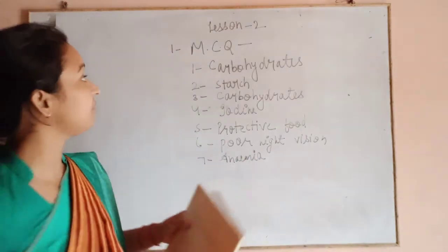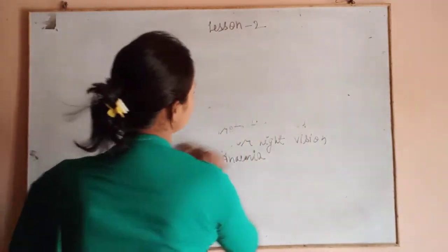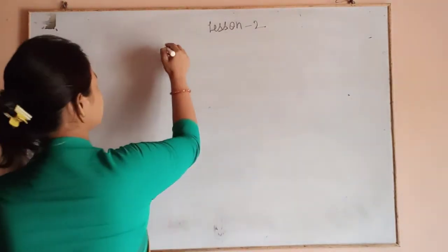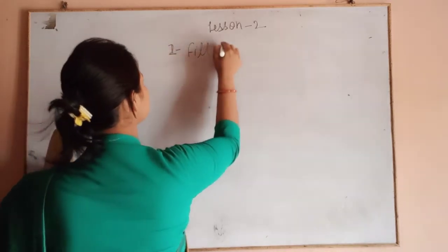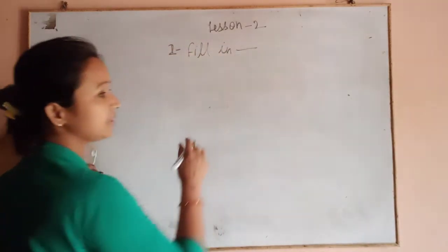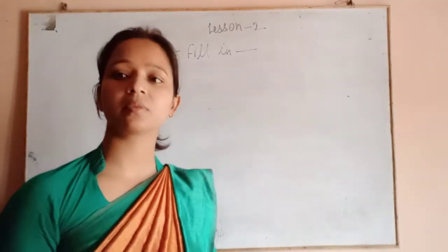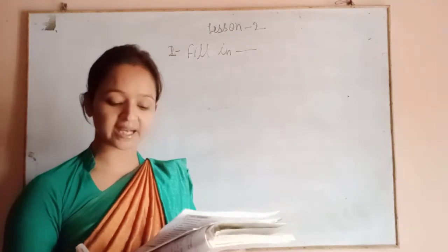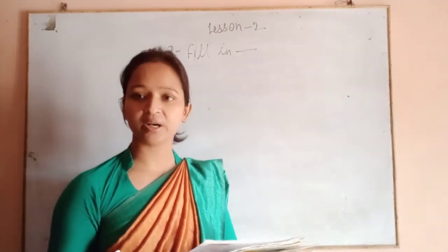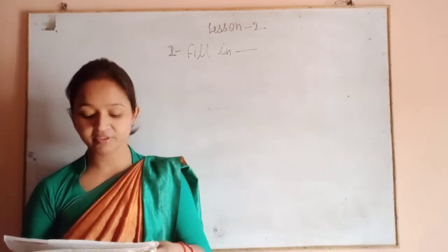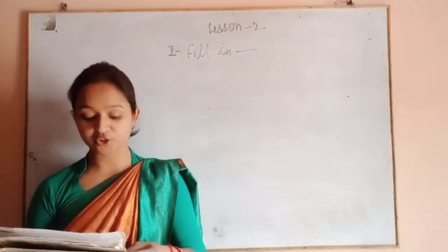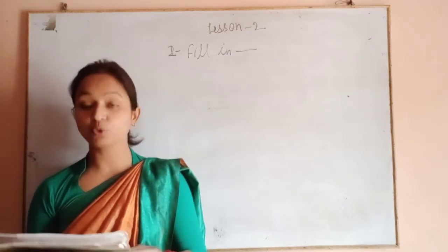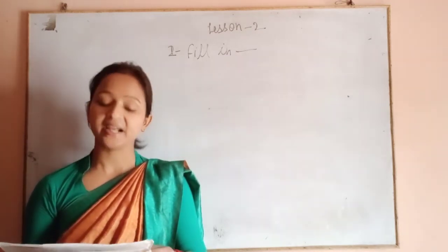Now come to the fill in the blanks. The first blank: the essential components of food are carbohydrates, fats, proteins, vitamins, mineral salts, water, and roughage.